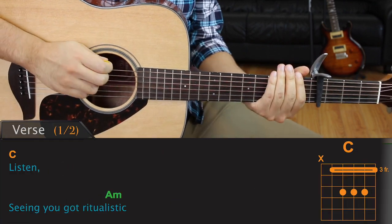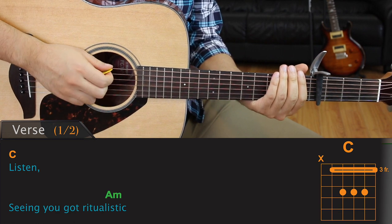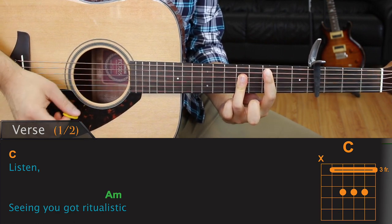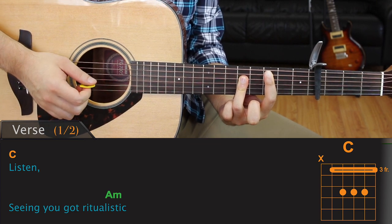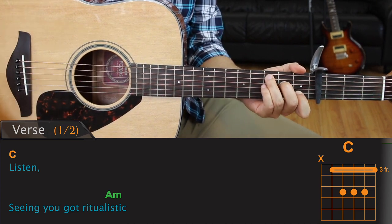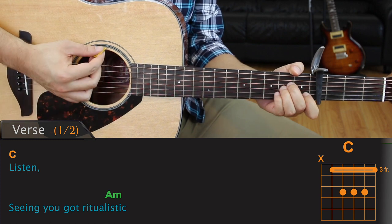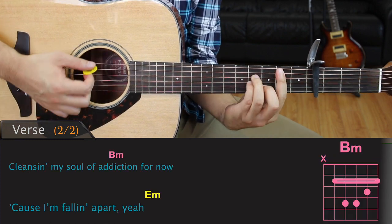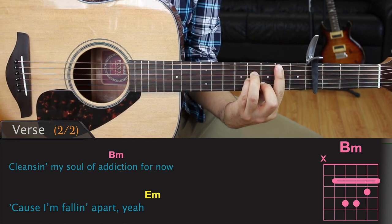The next part of the song is the verse. We'll be using four chords for this section. The first one is a C chord. I'll be using a C bar chord, but feel free to play the open C chord instead. The next chord we'll be using is an A minor, followed by a B minor, and finally an E minor.